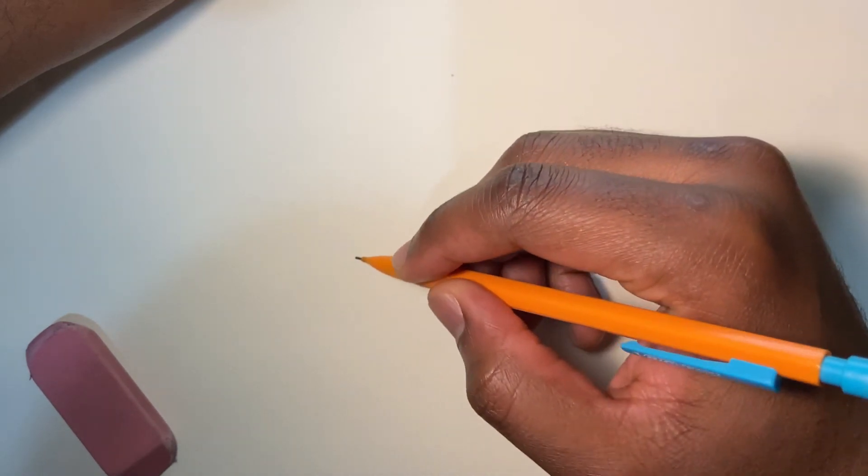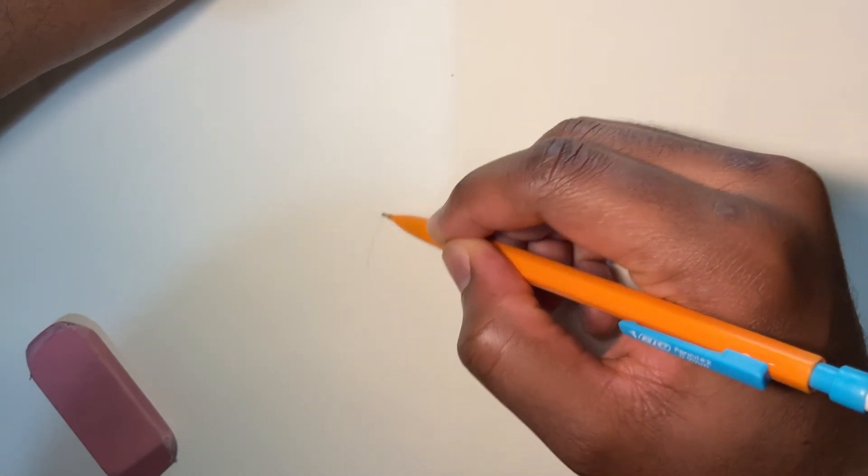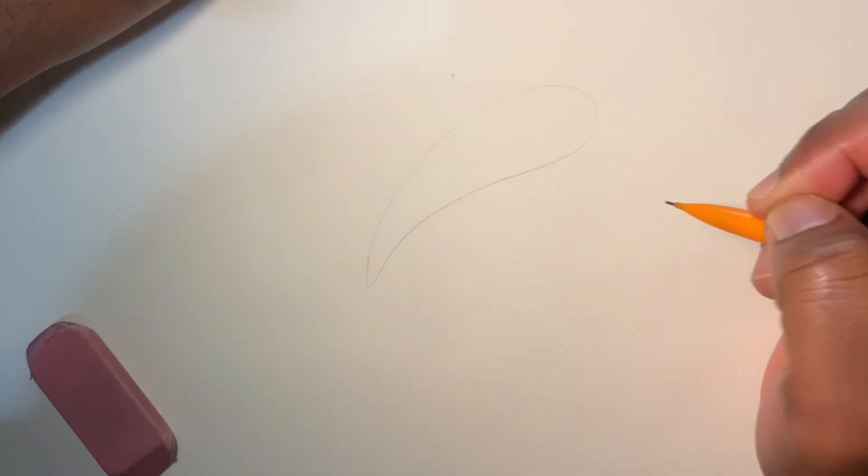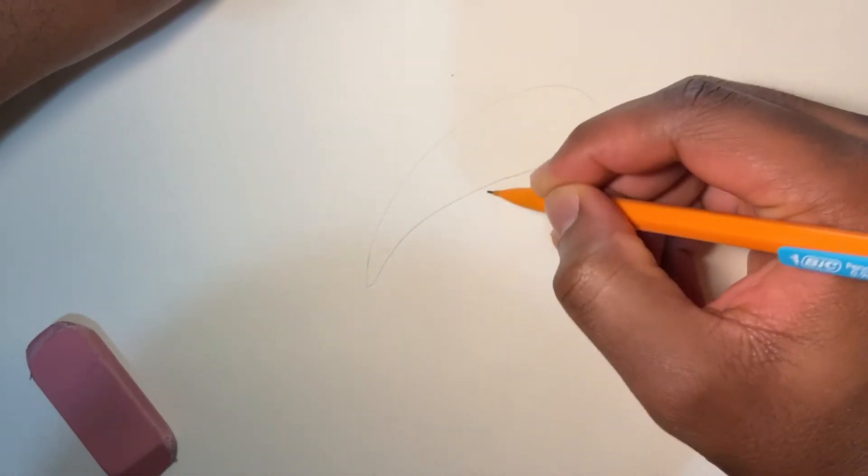So for this drawing, typically what you might see is people draw, let's say, the outline of the dolphin that might look like that before they continue with the drawing.